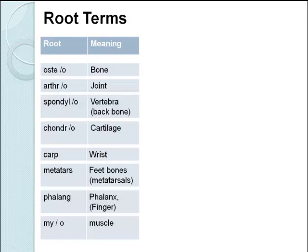Let's look at some root terms associated with orthopaedics. Osteo means bone. Arthro is joint. Spondyl or spondylo is your vertebrae — your spine or backbone. Chondro is cartilage. Carp is wrist. Metatars relates to your metatarsals, which are the long bones in your feet. Phalange is your phalanges or phalanx, meaning fingers and toes. And my, or myo, is muscle.